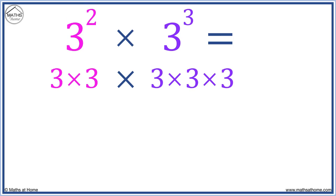Overall, we have 1, 2, 3, 4, 5 threes multiplied together, or 3 to the power of 5.